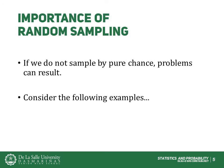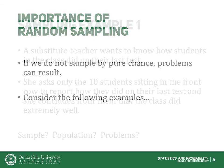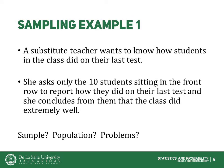To see why random sampling is important, consider the following ways that a sample can be obtained. In this example, a substitute teacher wants to know how students in the class did on their last test. She asks only the 10 students sitting in the front row to report how they did, and concludes that the class did extremely well.